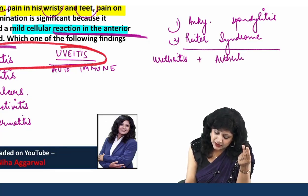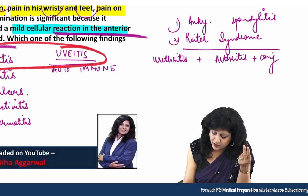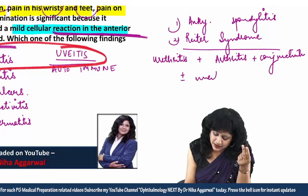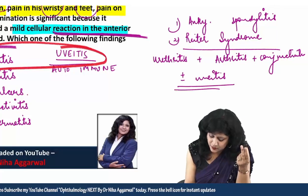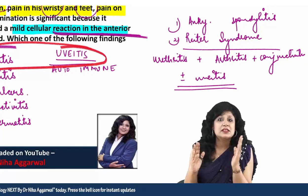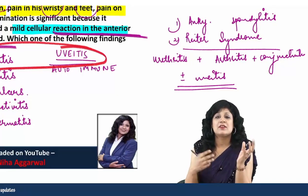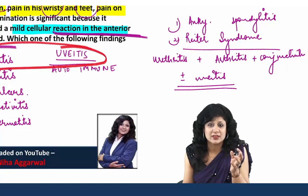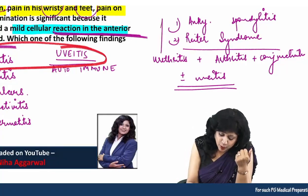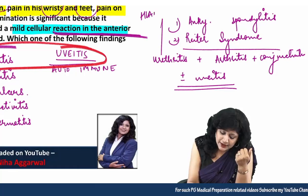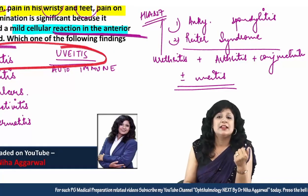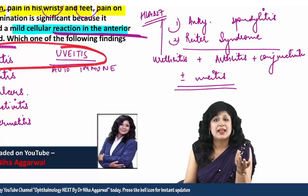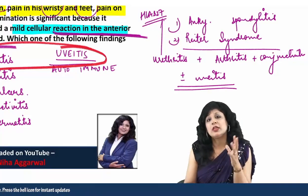The triad of Reiter's syndrome is urethritis, arthritis, and conjunctivitis — with or without uveitis. Most of the findings fit here. Both ankylosing spondylitis and Reiter's syndrome are HLA-B27 associated conditions. We can also think about psoriasis and inflammatory bowel disease.